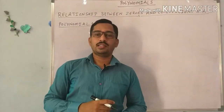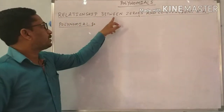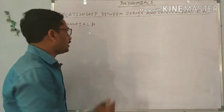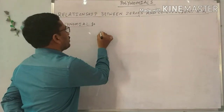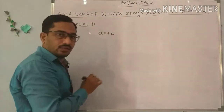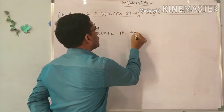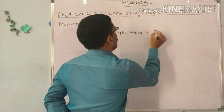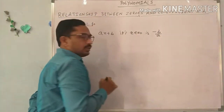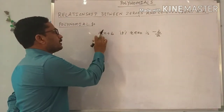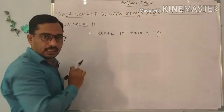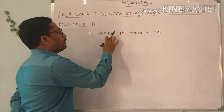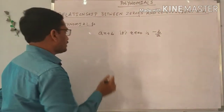In the polynomial chapter, in this video I explain the relationship between the zeros and the coefficients of a polynomial. We have already seen the zero of a linear polynomial. The linear polynomial is AX plus B, and its zero is minus B by A. Here, X coefficient is A and B is the constant term.